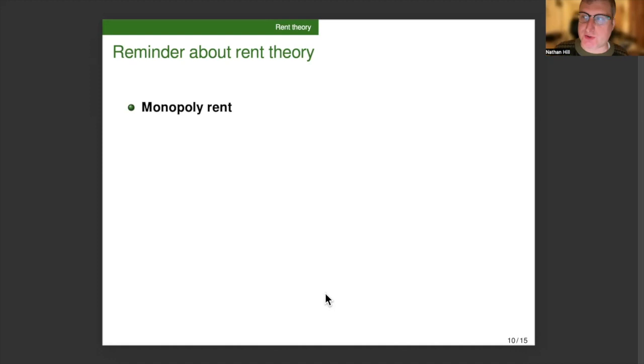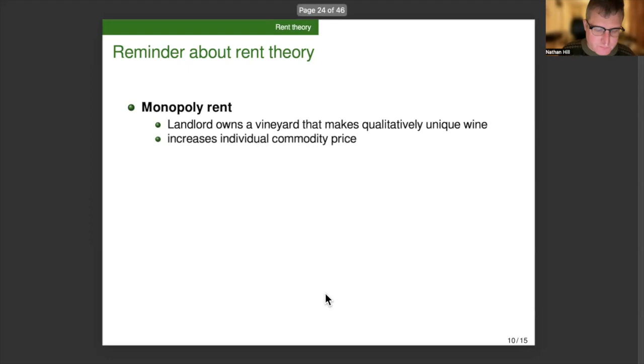So first of all, just a little bit of a reminder about Marxian rent theory. We have three kinds of rent. The first kind is monopoly rent. A landlord owns a vineyard that makes a qualitatively unique wine. And then, since the only place you can get that wine is from his vineyard, it means that he can charge as much as customers are willing to pay, regardless of supply. It increases the individual commodity price.